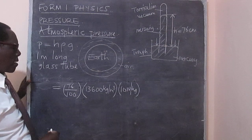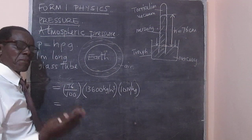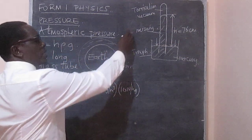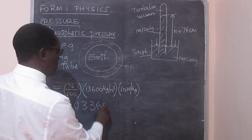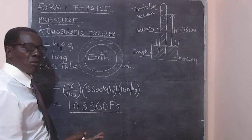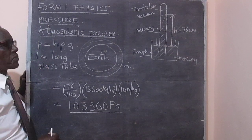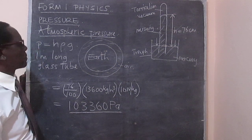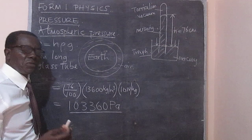When this is worked out, we will get a figure for the atmospheric pressure. Since the atmosphere thins out as we move further away from the surface of the Earth, this pressure is not a constant value — it will change depending on where the experiment is being done, that is, the height above sea level. That is how we obtain the value for the atmospheric pressure, which is the pressure due to the air around us — the air which is a mixture of gases.